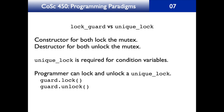lock_guard and unique_lock both lock the mutex in the constructor and unlock it in the destructor. However, if you're going to wait on a condition variable, you must use unique_lock. If necessary, the programmer can also directly lock and unlock a unique_lock by calling guard.lock() or guard.unlock(). That ends this presentation.